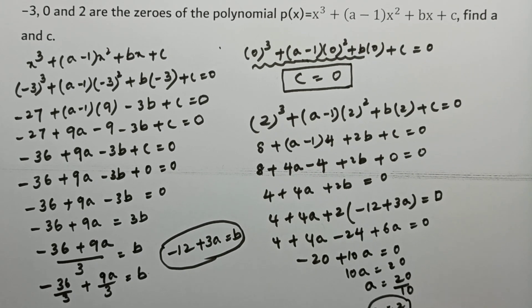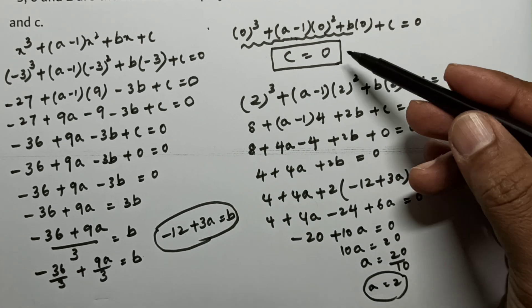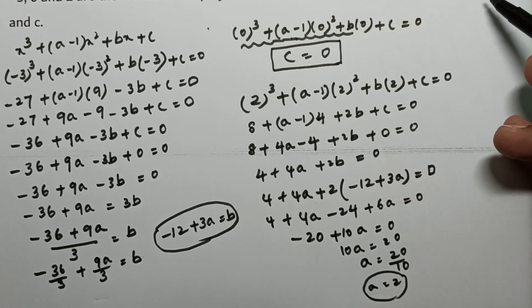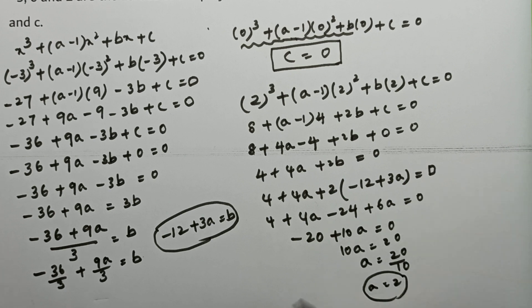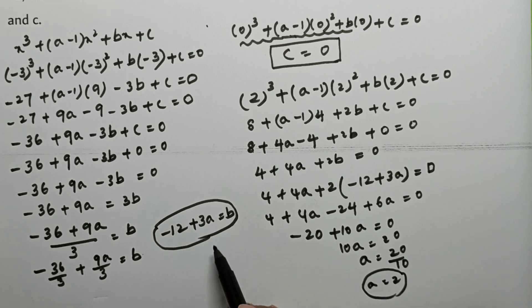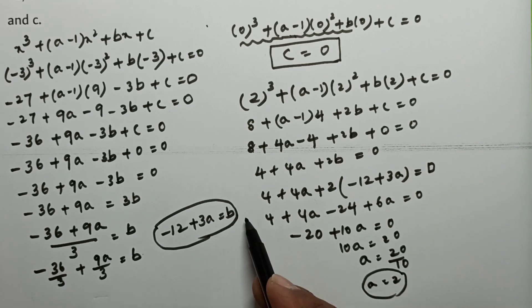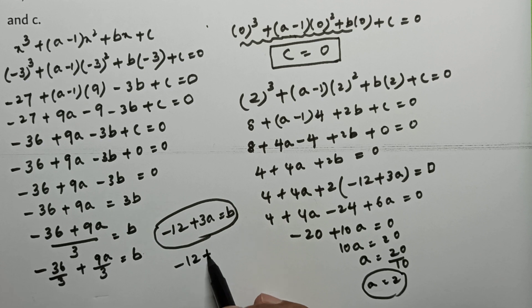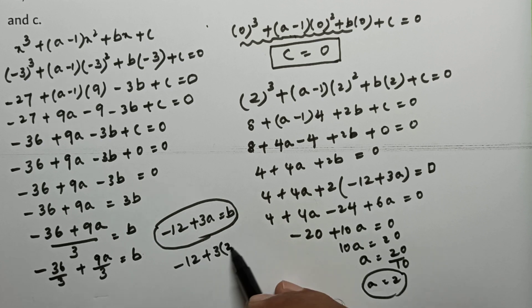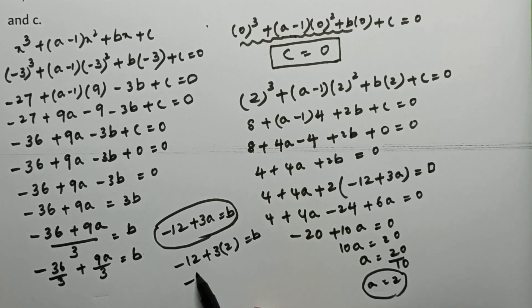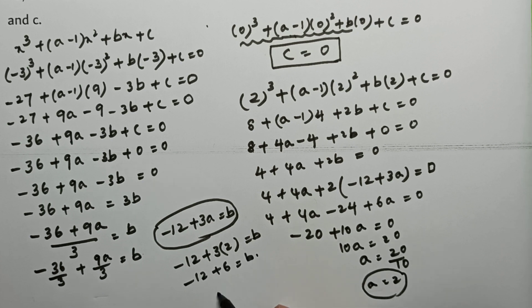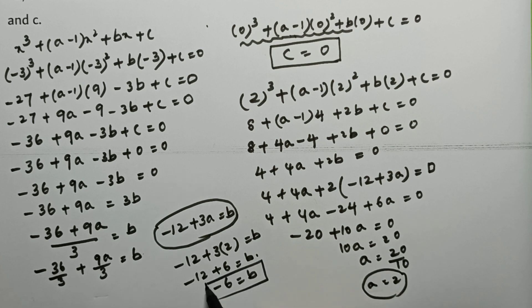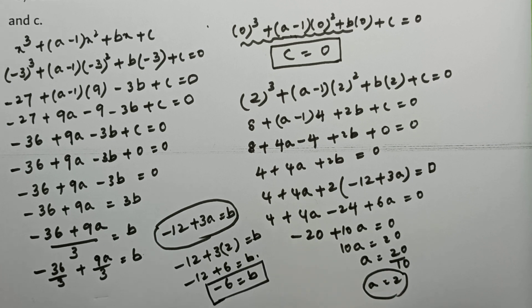So the values of a = 2 and c = 0. As a bonus, substitute a = 2 into b = -12 + 3a: b = -12 + 6 = -6. So the value of b is -6.